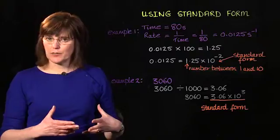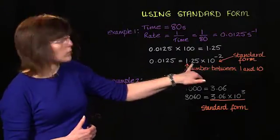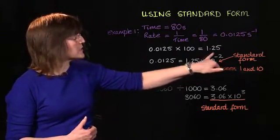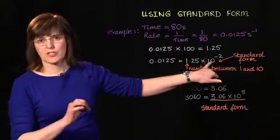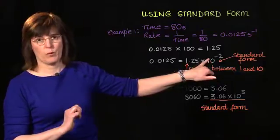And to write that in standard form, we write 1.25 times 10 to the minus 2, to remind us that actually that number is 100 times smaller than 1.25.